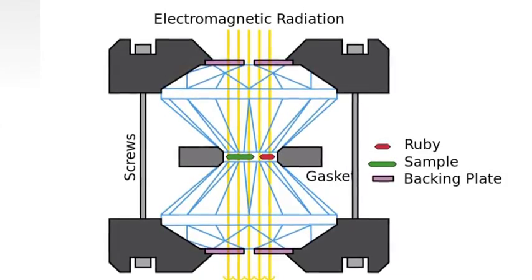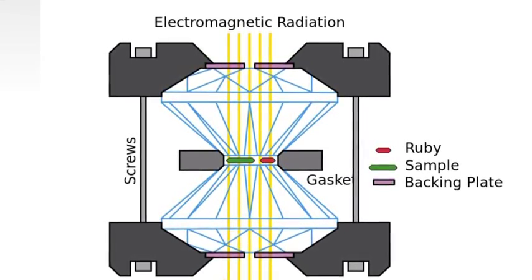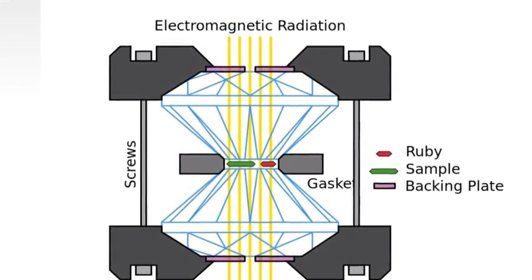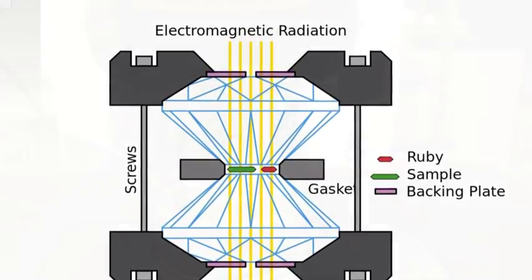The sample chamber contains the material to be studied along with ruby. The fluorescence of the ruby while the diamond anvil cell is under pressure is how scientists determine the pressure level inside of the cell.